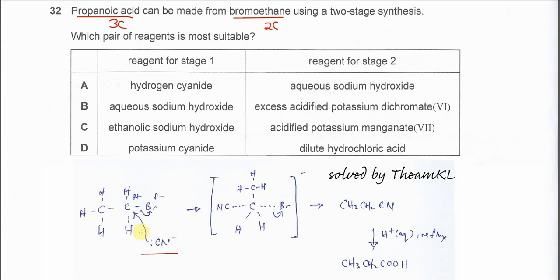The cyanide ion will attack this partial positive carbon. After that, the C-Br bond will break and the bromide will form and leave. This will form propane nitrile, which will undergo hydrolysis.